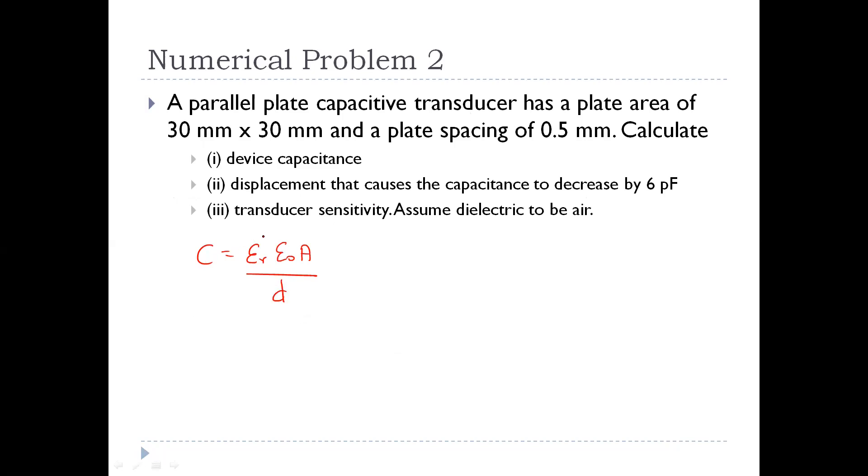C is capacitance, epsilon r is the relative permittivity. Here the dielectric is given as air, so epsilon r value is 1. Epsilon 0 value is 8.854 x 10 to the power minus 12 farad per meter. The area is given as 30 mm x 30 mm, so converting to meters that is 10 to the power minus 6. The distance between the plates is 0.5 mm, so it is 0.5 x 10 to the power minus 3 meter.